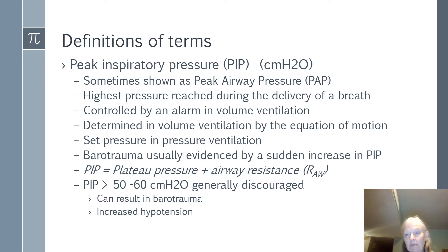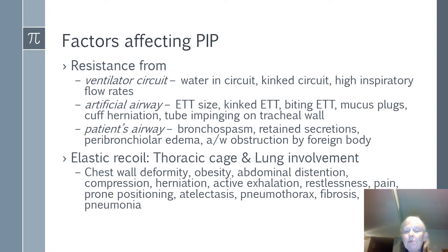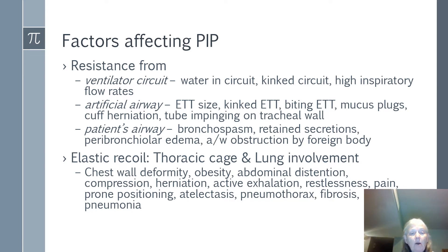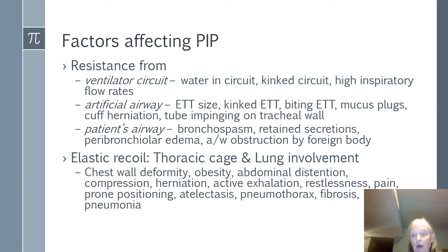Factors that can affect your peak inspiratory pressure include your circuit — water in your circuit will occlude flow, increase pressure, and decrease your tidal volume. A kinked circuit is another issue, as circuits can get caught between the bed rail and the ventilator. High inspiratory flow rates also matter. With artificial airway, a size 6 ET tube has a small lumen. A kinked ET tube can happen when patients turn it with their tongue or bite it. Mucus plugs, especially when dry, and cuff herniation are also factors, as is the tube sitting on the tracheal wall.